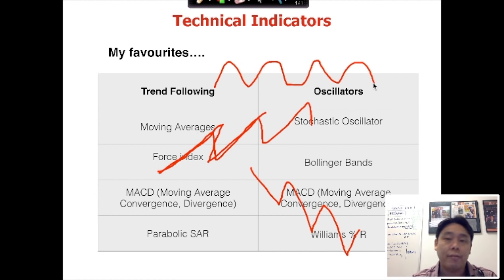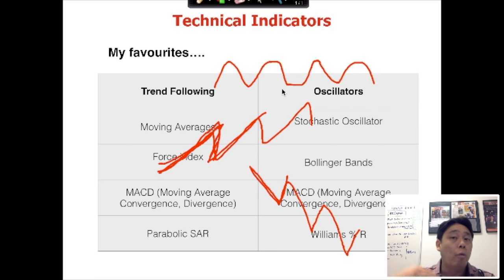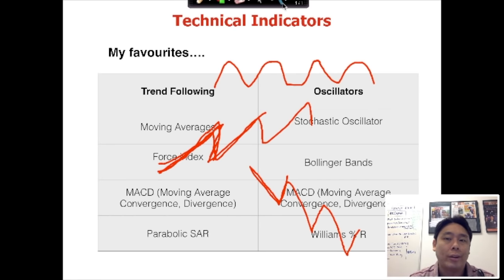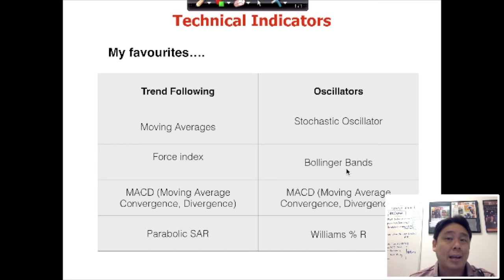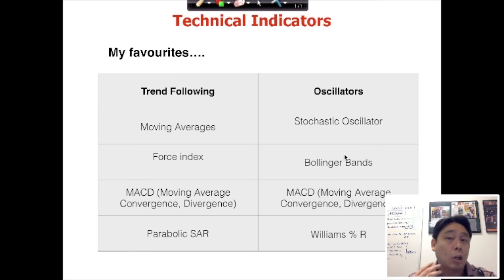No matter what, there's a wave pattern. When price gets too high it tends to retrace back — the pendulum has to swing back to the mean. Similarly if it gets too low, it has to retrace back to the mean. So how do we measure whether the price is overbought and ready to come back down, or oversold and ready to come back up? We use oscillators that measure overbought and oversold conditions. My favorite oscillators include the Full Stochastics, Bollinger Bands, MACD, and Williams Percentage R.